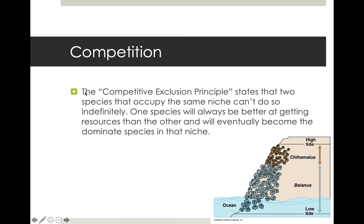Why does this competition exist? Why don't organisms just agree to share? Animals can't think the way humans can and can't make conscious decisions about getting along. Animals driven entirely by instinct are even less capable of that. The concept used to explain this is the competitive exclusion principle — the idea that one animal is always going to be better than another at doing something in the same environment.